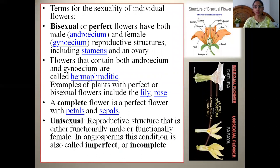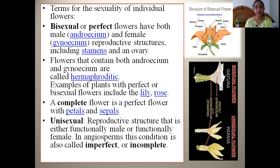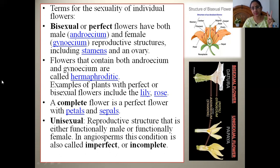Before going into the details of these mechanisms, we should have knowledge of a perfect flower — what is a bisexuality condition and what is a unisexuality condition. There are two terms in biology: bisexual flowers and unisexual flowers. Bisexual flowers are also called perfect flowers or hermaphrodite flowers because they have all reproductive parts present in the same flower.